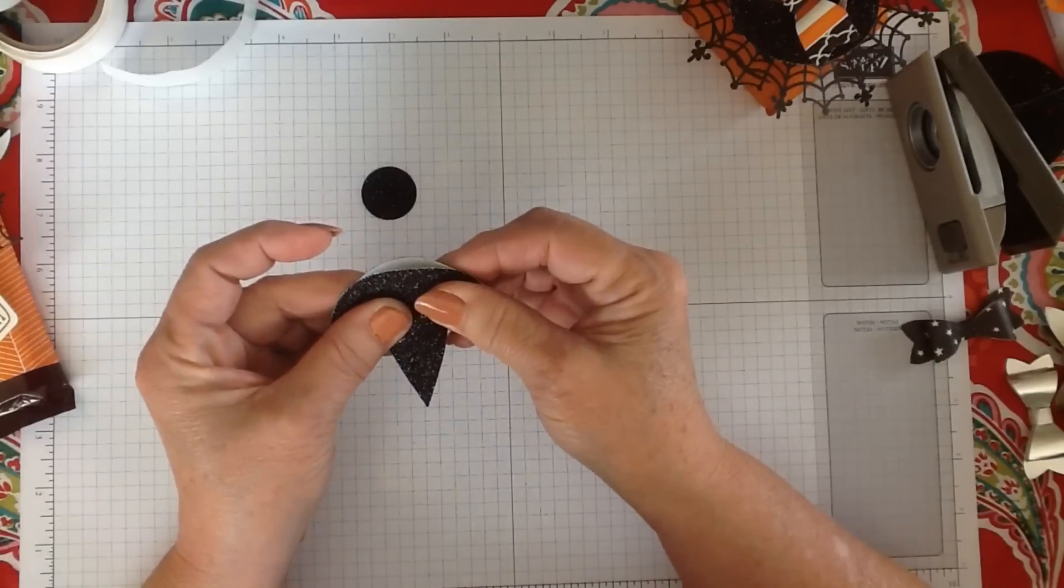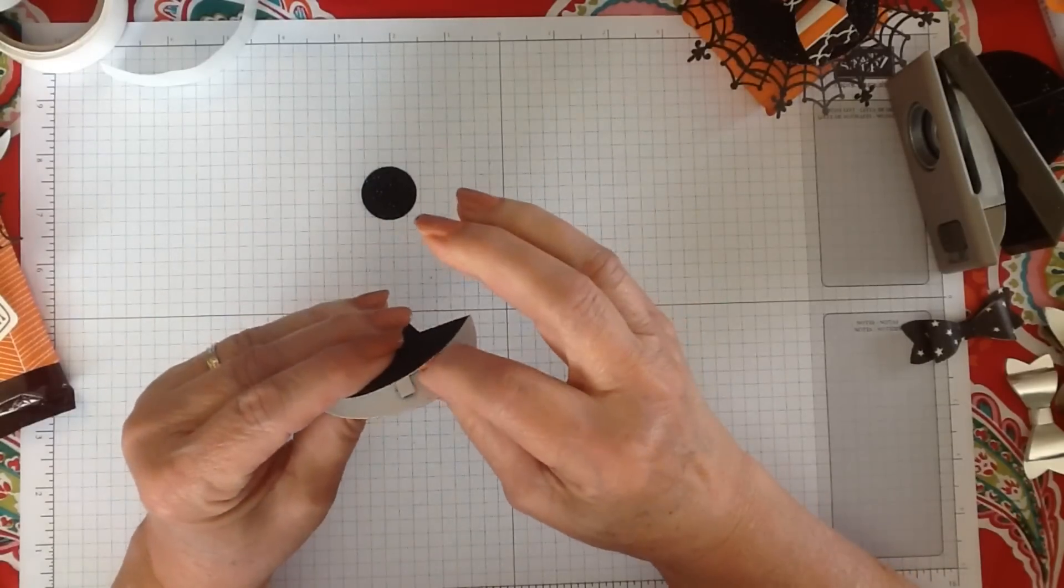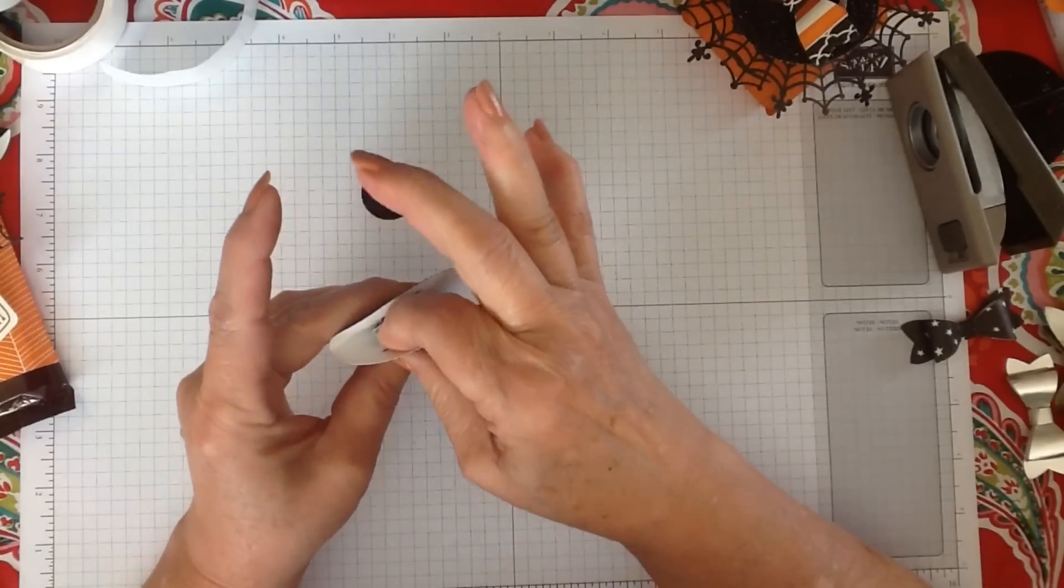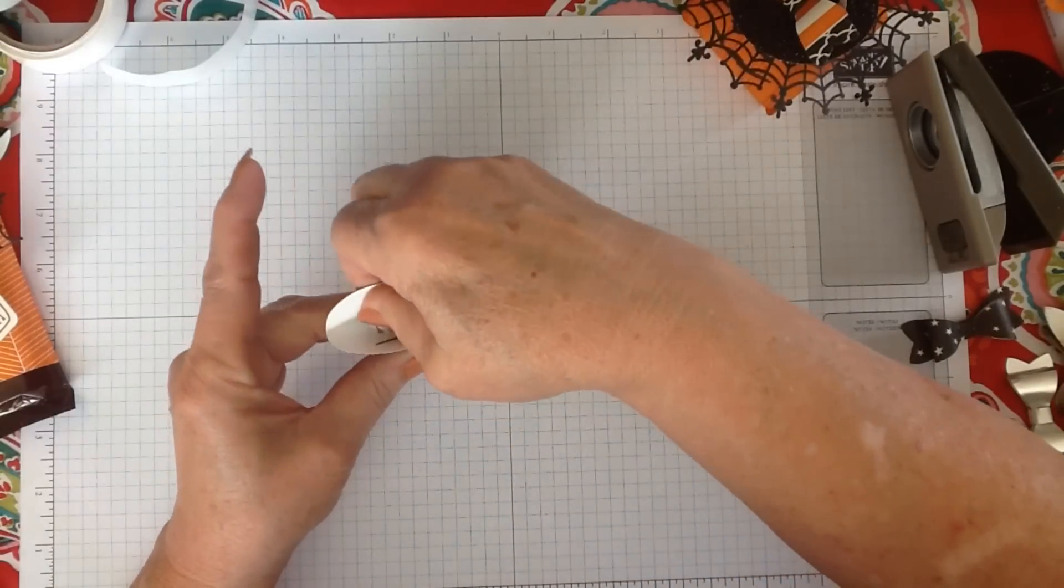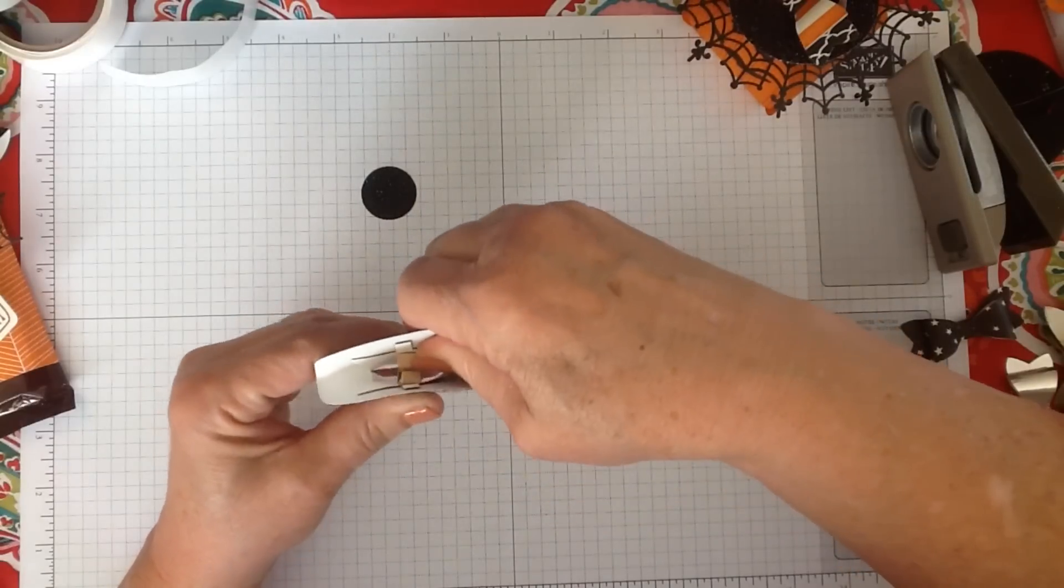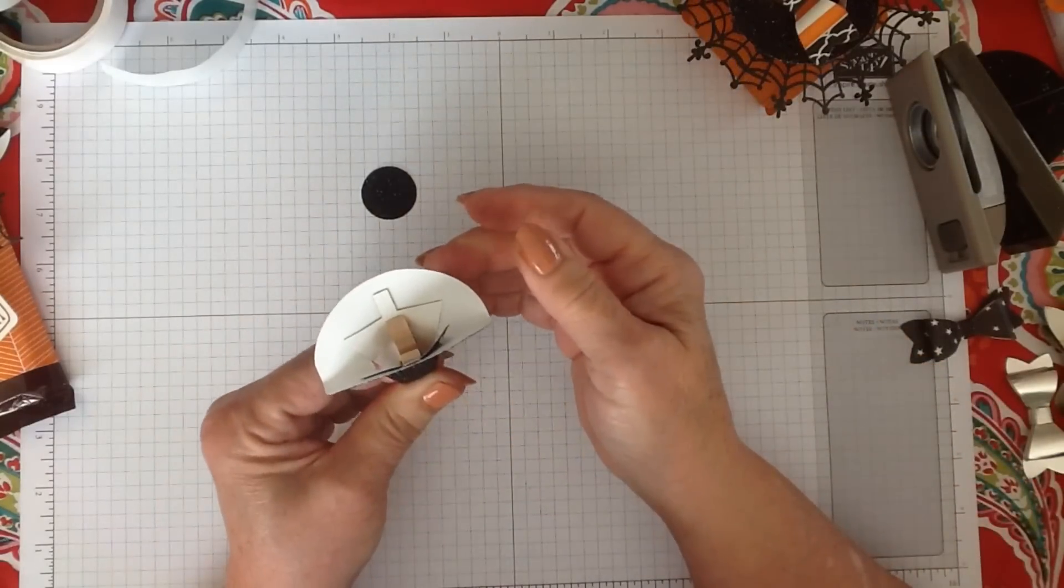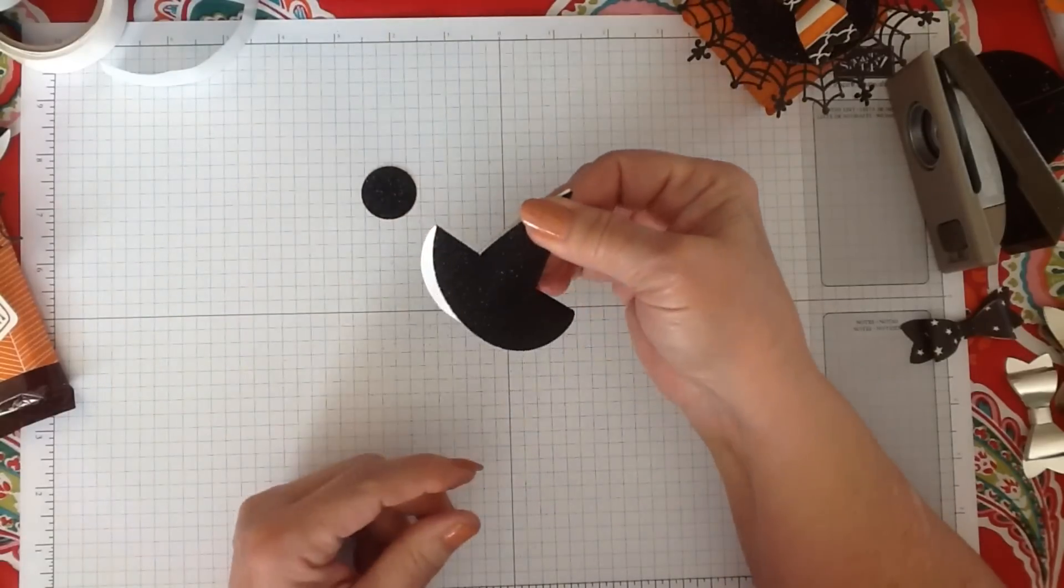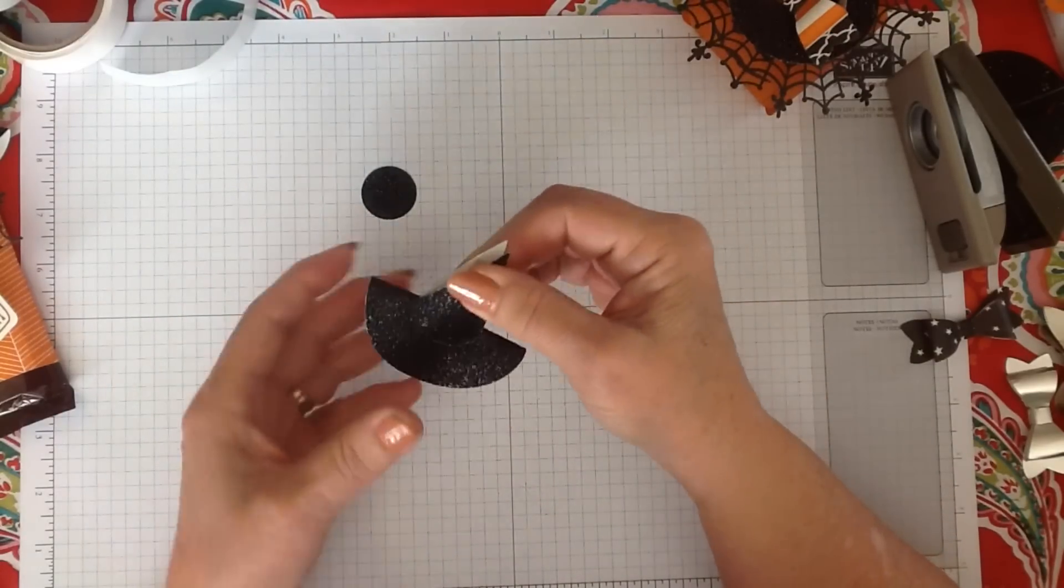Just kind of crease it a teeny bit, but not a lot there. Make sure your glue dots are stuck down inside here. Just making sure I've got all my glue dots down on the inside. See what it looks like on the inside there? And there you go. You can open and close your little witch's hat.